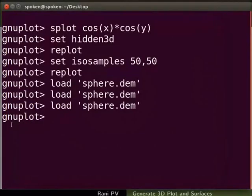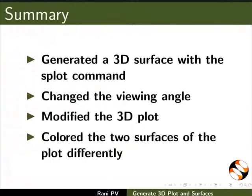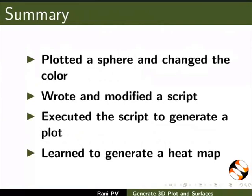Let's exit GNUplot and gedit. To summarize, in this tutorial we generated a 3d surface with the splot command, changed the viewing angle, modified the 3d plot, colored the two surfaces of the plot differently, plotted a sphere and changed the color, wrote and modified a script, executed the script to generate a plot, and learned to generate a heatmap.